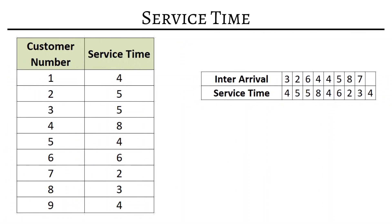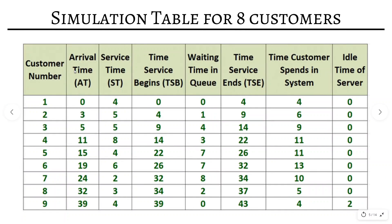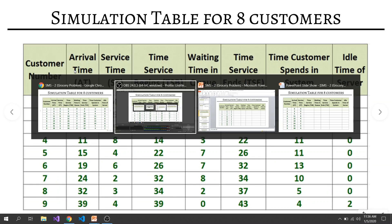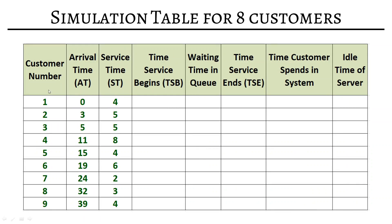Now we will calculate the service time. This is very easy — just assign each service time to each customer sequentially. So the service times assigned are: four, five, five, eight, four, four, five, two, four, and so on. In this way you assign a service time to each customer. Next we move on to the simulation table, which has many columns that I have explained.